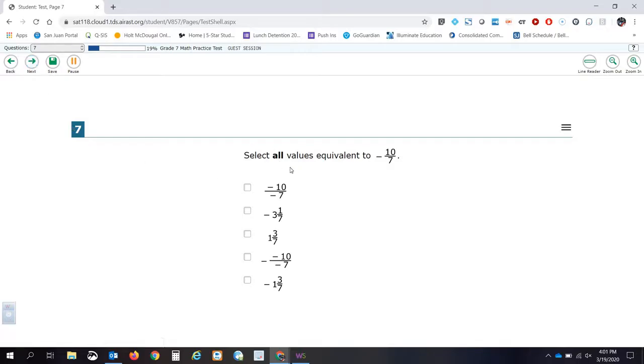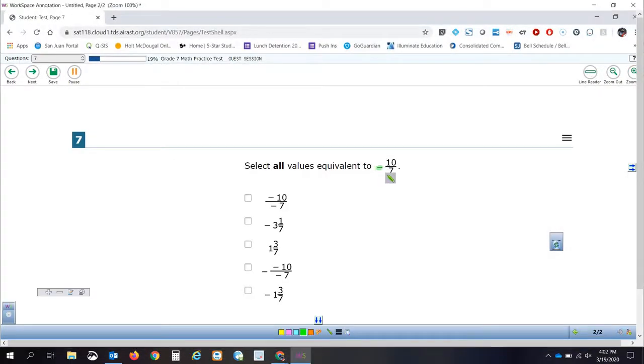Let's go to the next question. Question number seven says: select all values that are equivalent to negative 10/7. Just a reminder here, we only have one negative. That's important to know that our answer is negative, especially if we take a look at this first question. Hopefully you know that a negative divided by a negative is a positive. So this first answer is actually equal to positive 10/7. So this one is a no.